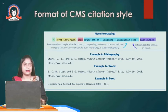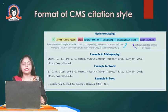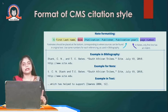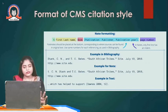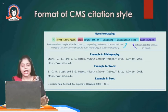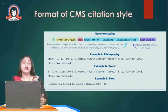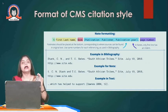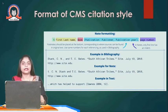The third style is CMS — Chicago Manual of Style. In this citation format, we write the author's full first and last name, then the book name, publication, location, publisher's name, year of publication, and page number. This format is used for historical, business, or fine arts research.